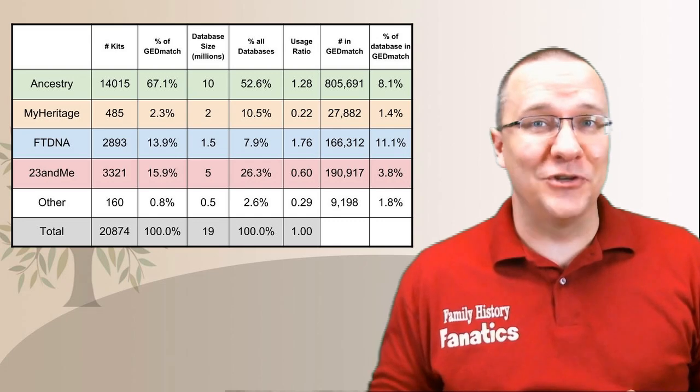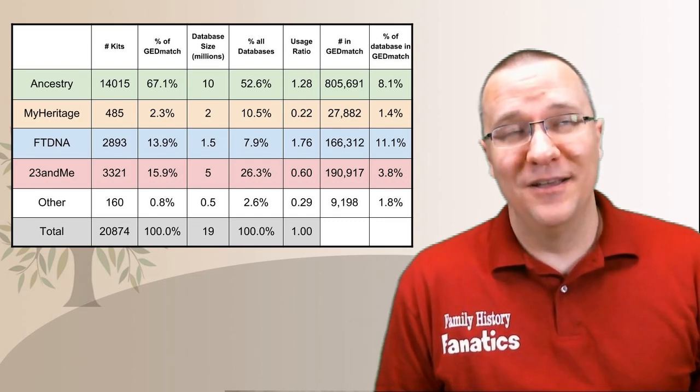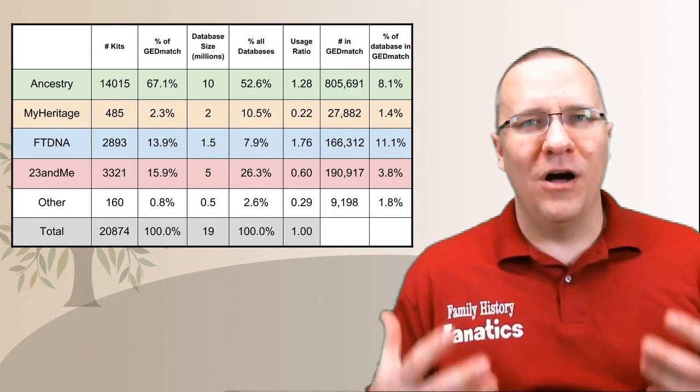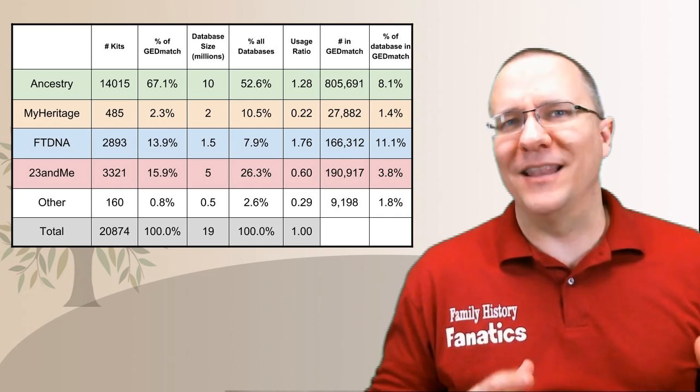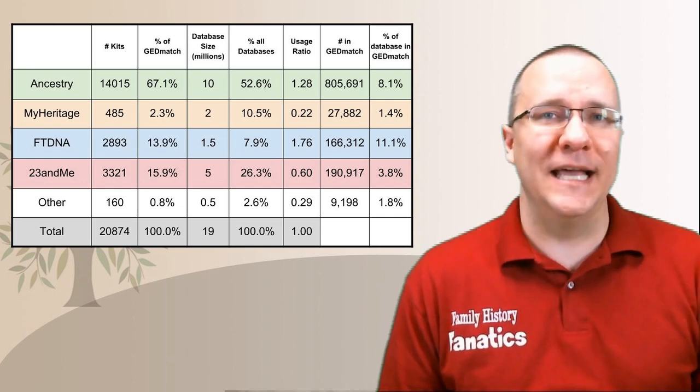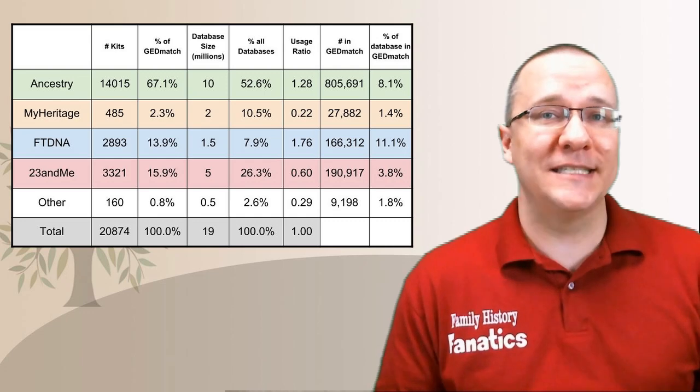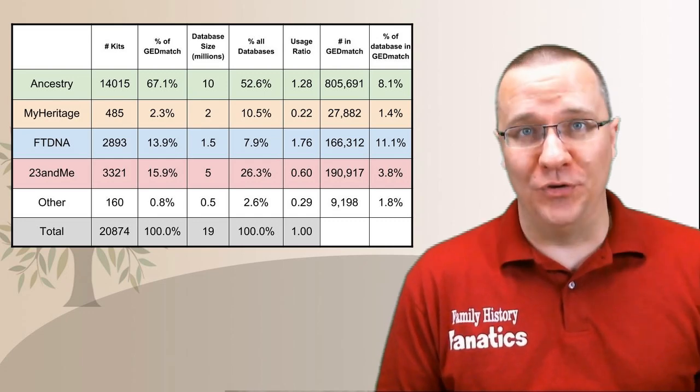Ideally, I'd like all these numbers to be really close to 100%. But even if all of the companies were only at 11% like FamilyTreeDNA, then the GEDmatch database would double in size and it would be that much more useful.